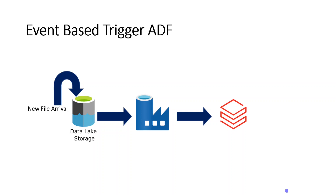Which means whenever we are going to receive a new file within data lake storage, then by detecting that event, Data Factory trigger can invoke a Data Factory pipeline. So what is event-based trigger in ADF? Whenever a new file arrives into data lake storage, Azure Data Factory trigger can detect that event and invoke the Data Factory pipeline immediately. And it's not only for new file arrival — it could also be for file deletion. These are called different events. So as soon as an event happens, the trigger will invoke the Data Factory pipeline.